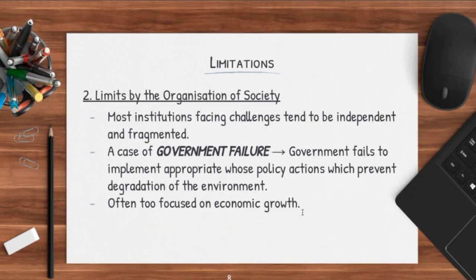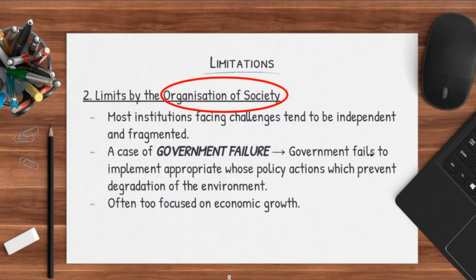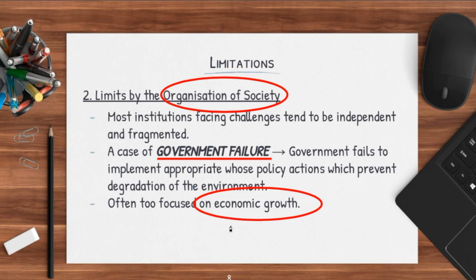The other limitation is limits posed by the organization of society — the way in which society is actually crafted and molded. Most institutions facing challenges tend to be independent or fragmented, and this is usually a case of government failure. Government failure basically means that if a government is unable to implement the correct policies which can prevent degradation of the environment or help boost economic growth, this may actually result in greater limitations. A lot of governments are very focused on economic growth — and this is actually a trade-off — because when you focus too much on economic growth and produce a lot in factories, it results in air pollution which harms the environment, creating a limitation. So you realize how limitations and trade-offs are actually somewhat interlinked.